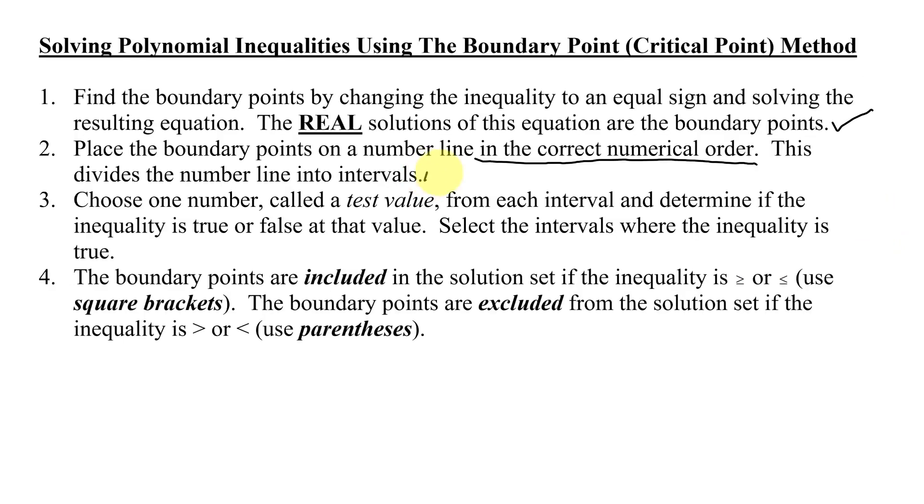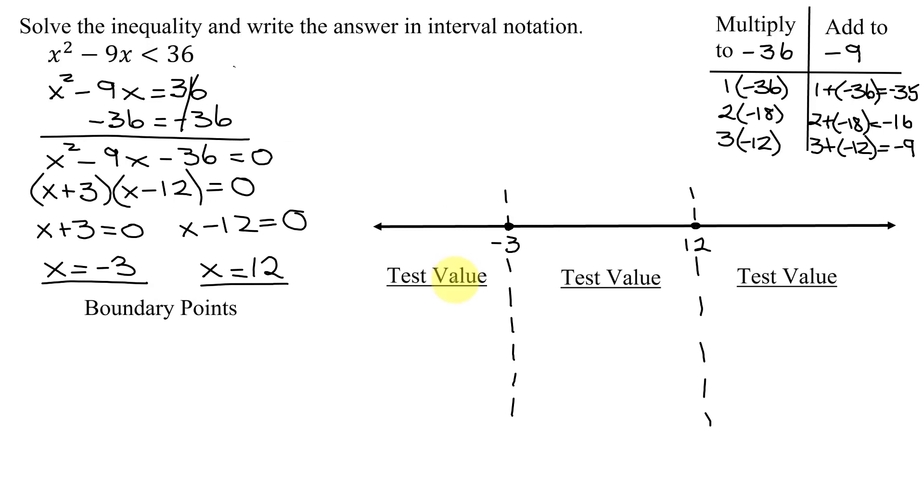So now I've completed step 2. Step 3 says to choose one number called a test value from each interval and determine if the inequality is true or false at that value. We need to select the intervals where the inequality is true. So I'm going to need a test value in each of my three intervals. Looking at the interval where x is less than negative 3, does it matter which x value I pick? No. I'm just going to pick x equals negative 5. But I could have equally picked x equals negative 4 or negative 10, as long as it's to the left of negative 3 on the number line.